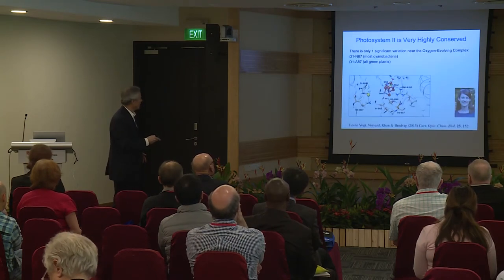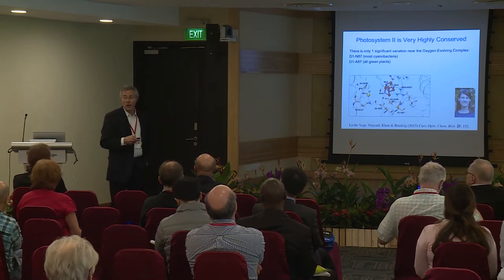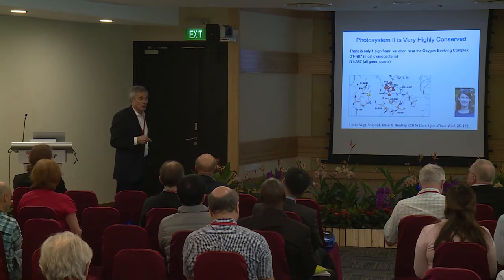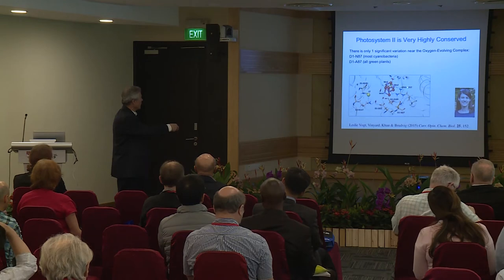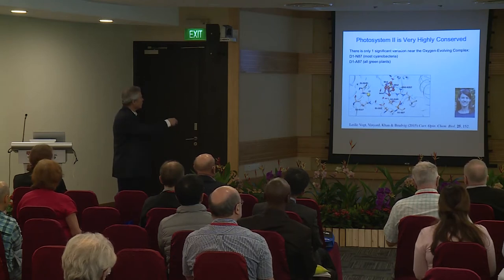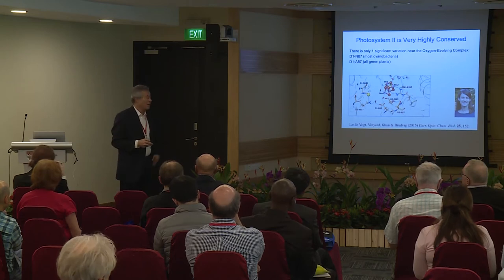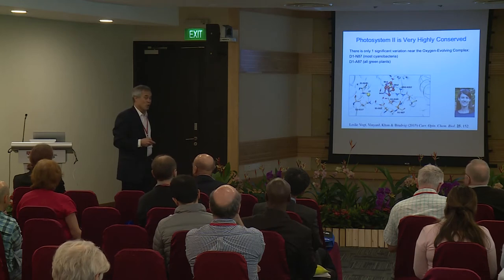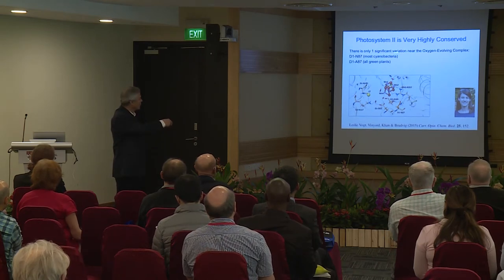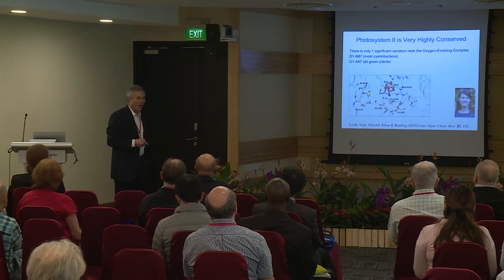One very interesting aspect of Photosystem II is that the residues around the oxygen evolving complex are incredibly highly conserved. Leslie Vogt did an analysis of gene sequences. It turns out the oxygen evolving cluster is at the interface of three subunits: the D1 subunit, the CP43 subunit, and the D2 subunit. She took a sector of the protein including all three polypeptides and analyzed variation among all sequences from cyanobacteria, algae, and higher plants. It turns out there's only one non-conservative change among all of them — amazing, especially since cyanobacteria and plants diverged about a billion years ago, yet all are basically the same.